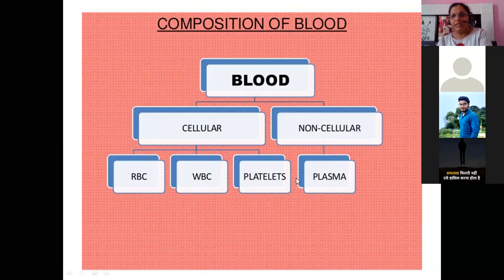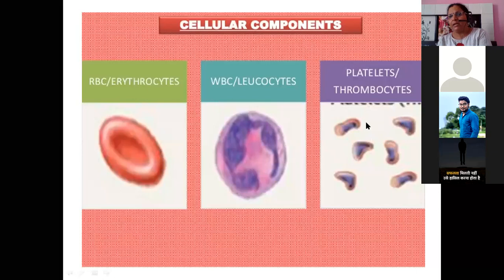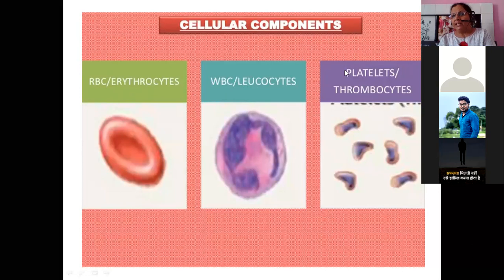Each blood component has two names: RBC is also called erythrocyte, WBC is also called leukocyte, and platelets are also called thrombocytes. So the cellular components are RBC (erythrocyte), WBC (leukocyte), and platelets (thrombocytes), while the non-cellular component is plasma.